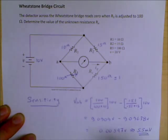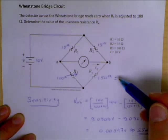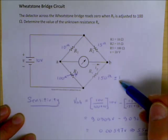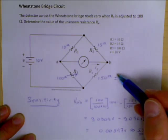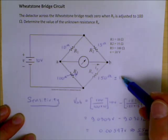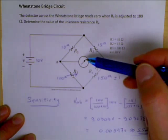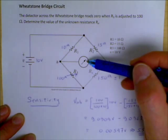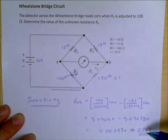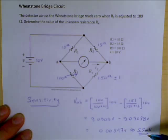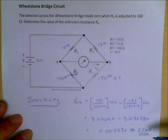So in order to detect a 1 ohm change in the 150 ohm unknown resistor, we would have to have a voltmeter capable of detecting something as small as 5.5 millivolts. 5.5 millivolts is well within the range of a standard voltmeter.